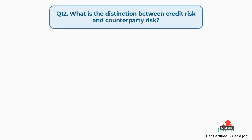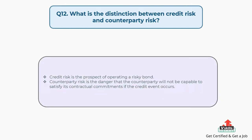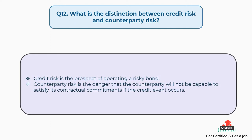Question number twelve: what is the distinction between credit risk and counterparty risk? Credit risk is the prospect of operating a risky bond, whereas counterparty risk is the danger that the counterparty will not be capable to satisfy its contractual commitments if the credit event occurs.